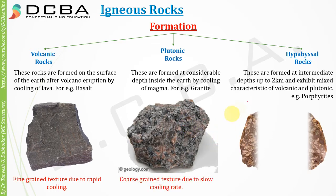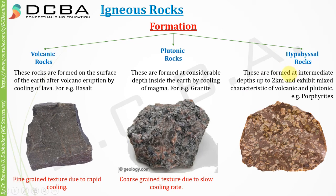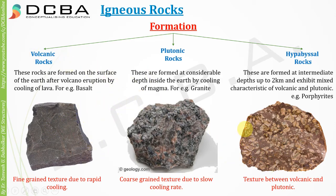The last type is hypabyssal rocks. They are formed at an intermediate depth of up to two kilometers and exhibit mixed characteristics of both volcanic and plutonic rocks. An example is porphyrites. The texture is intermediate — neither too fine-grained nor too coarse.